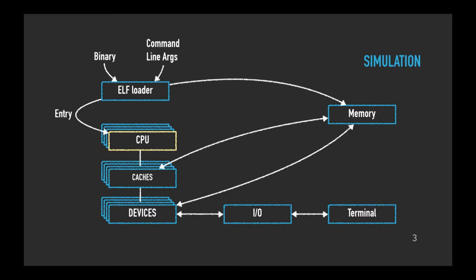A key tool of a computer architect is a simulator, and a simulator allows you to run an application on top of a software model of the system in order to fully observe its performance. There are many ways you can build a simulator. I'm going to talk about a very simple functional simulator that I've built in Go.